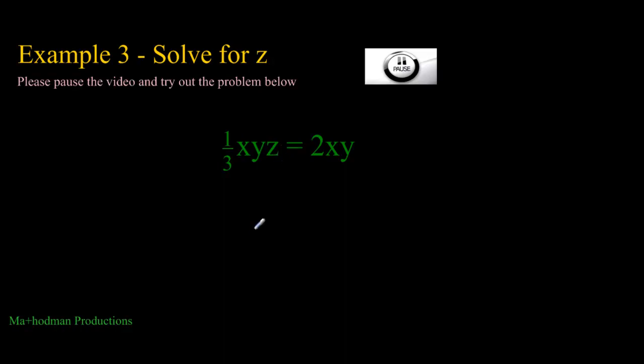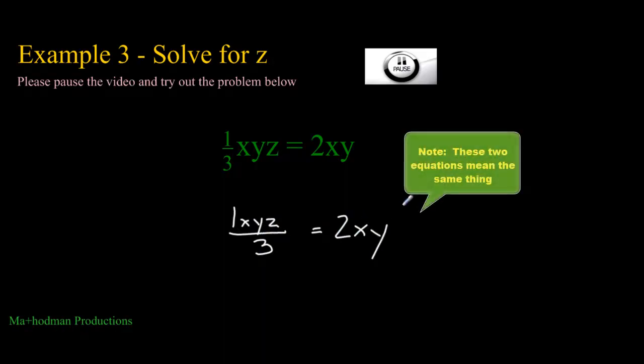You can rewrite this by putting all the variables on the numerator of the fraction, kind of like this. 1xyz over 3 equals 2xy. Those two equations mean the same thing, but I'd rather look at the one in the white font than the one in the green.